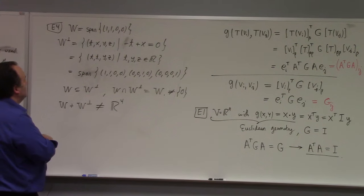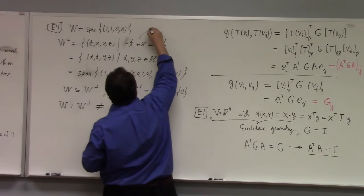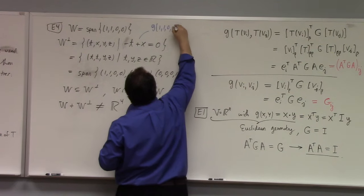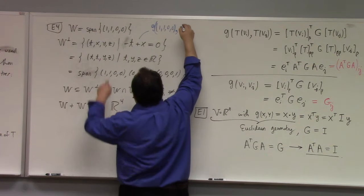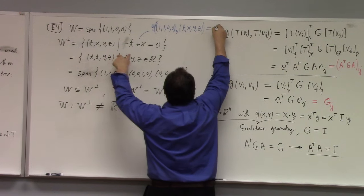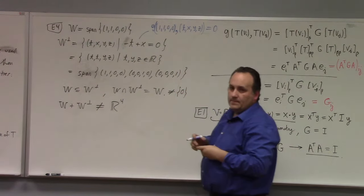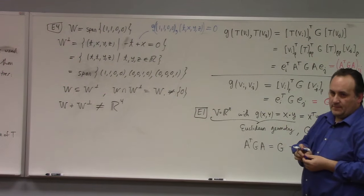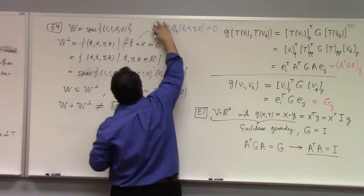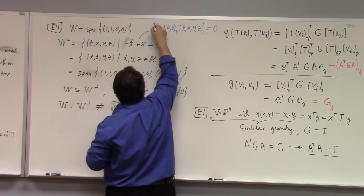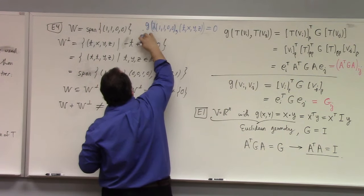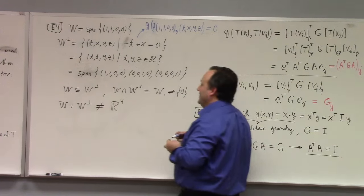So what is the definition of W⊥ here? It's {(T, X, Y, Z) : G((T, X, Y, Z), λ(1,1,0,0)) = 0}, giving −T + X = 0. The Y and Z go away, giving us the three-dimensional space. Note that lambda there just means a scalar multiple — the condition just needs to hold for a generator of W. Lambda doesn't just have to be an eigenvalue, just saying.